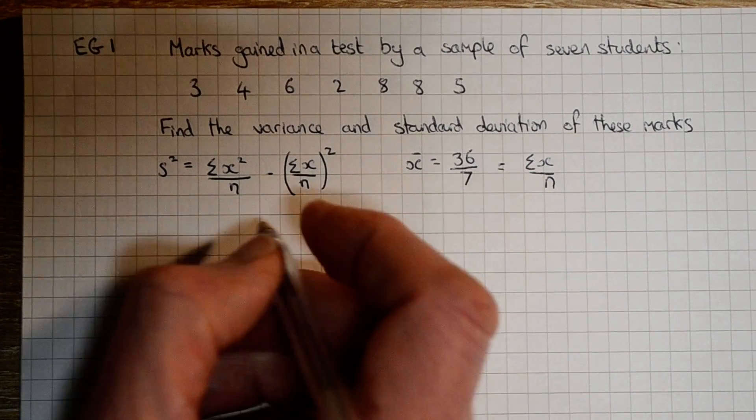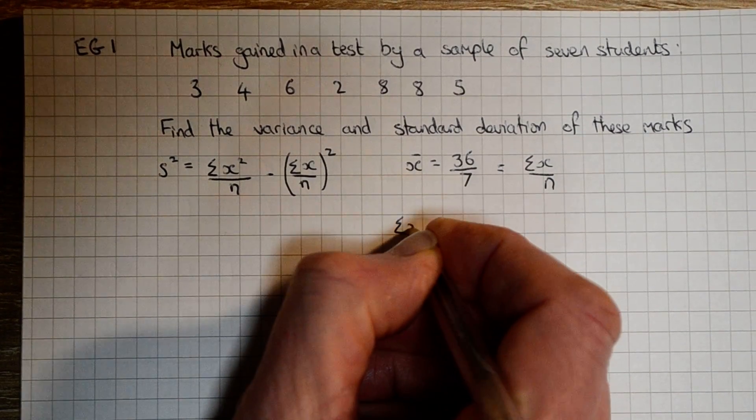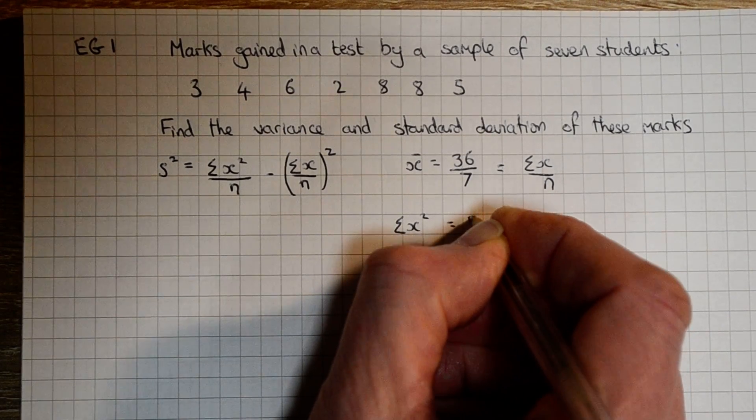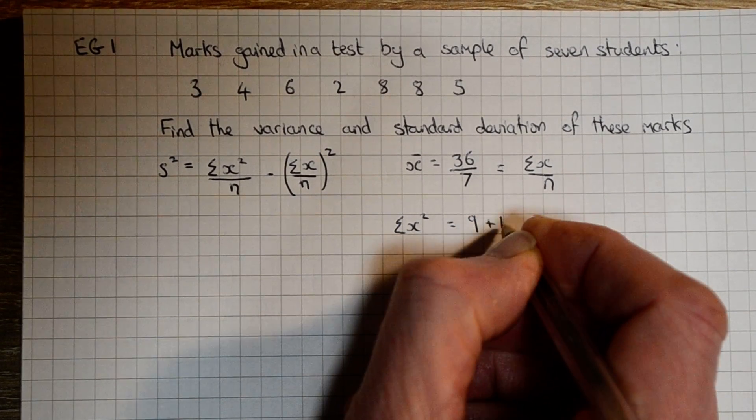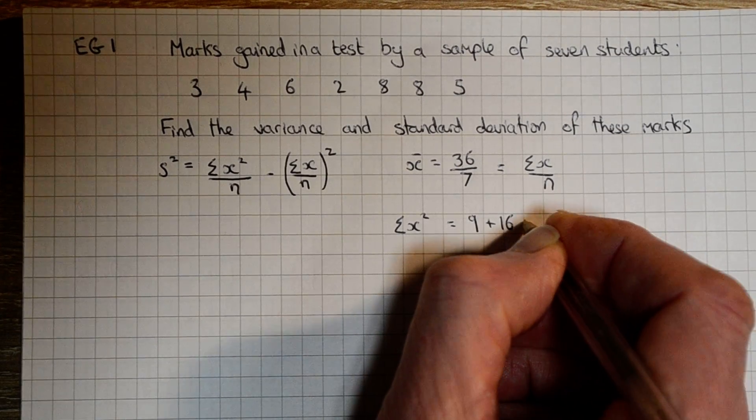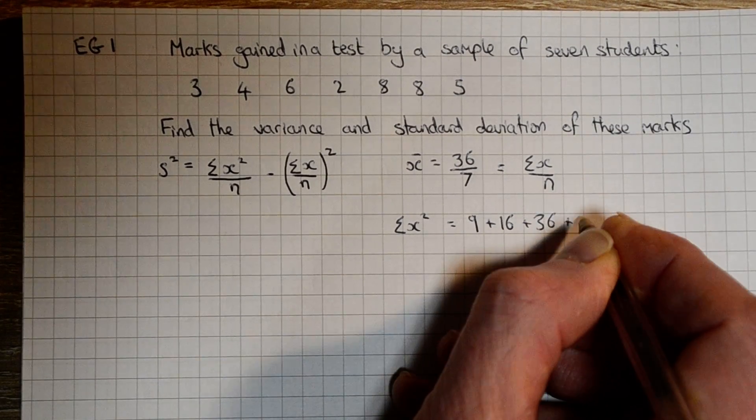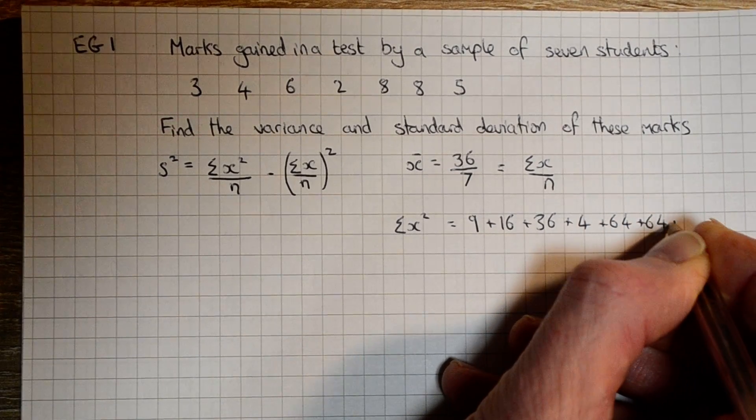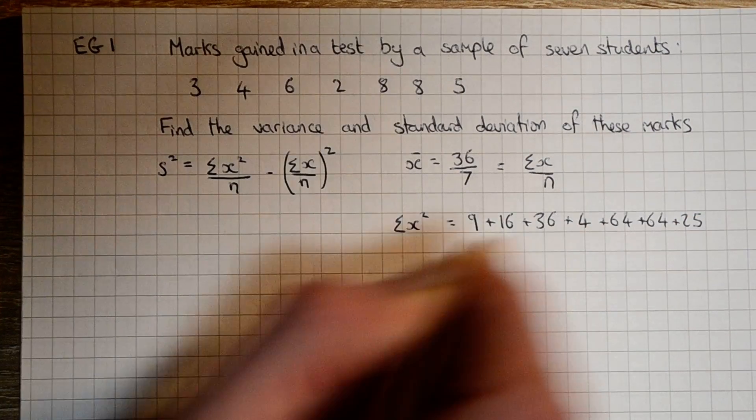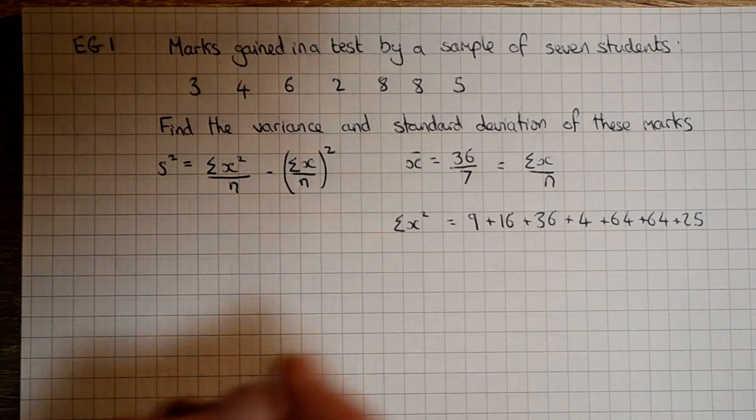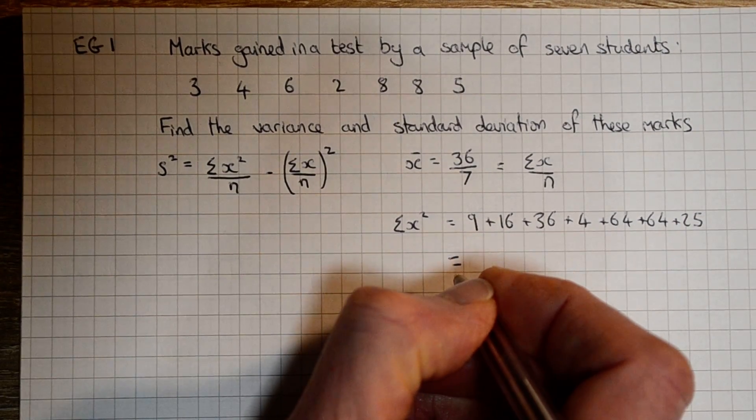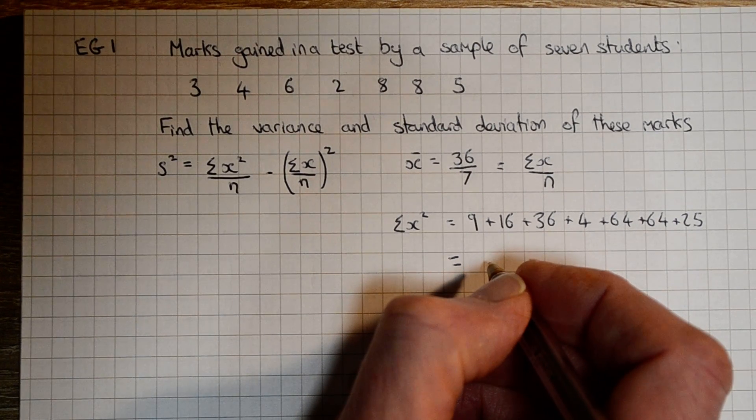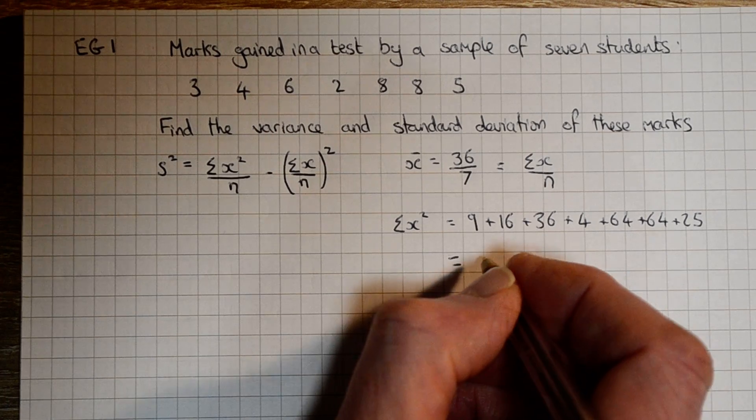To find the sum of x squared, the first value is 3, 3 squared is 9, the second value is 4 squared and so on. If we find their total we get 218.